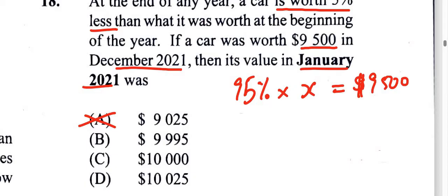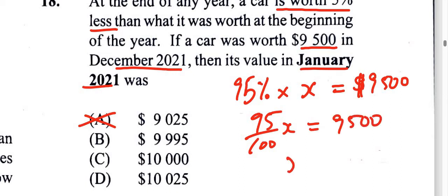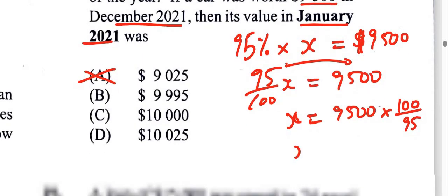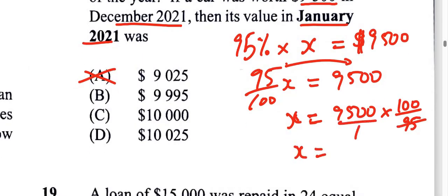The original amount being 100% losing five percent is 95%. We can write that as 95 over 100 times x equals 9,500. I can find x by transposing — reciprocating 95 over 100 to get 100 over 95. We can see that 95 goes into 95 once, and 100 times 100 gives us 10,000. So C, ten thousand, is the answer.